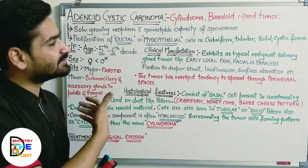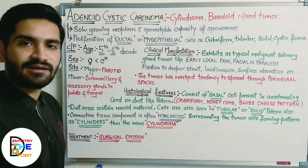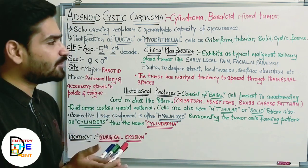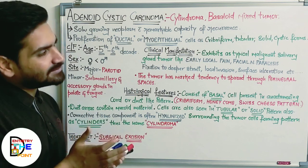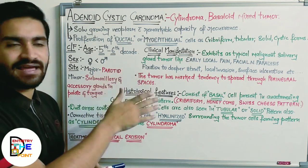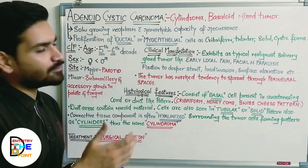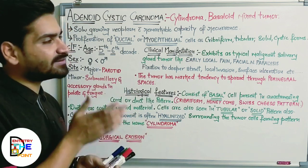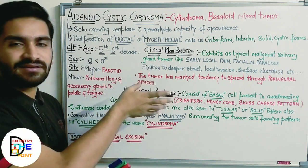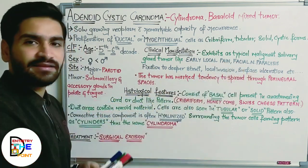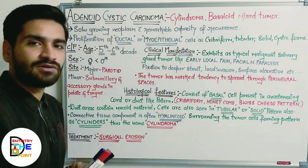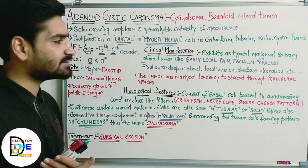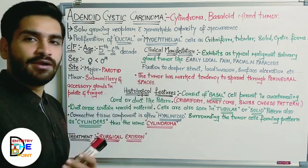The clinical manifestations of this tumor are quite similar to other malignant salivary gland tumors. It exhibits typical malignant salivary gland tumor features: early local pain in the affected area, facial nerve paralysis if the parotid gland is affected due to perineural spread in the facial nerve, and fixation to deeper structures — meaning if you try to move the tumor it will not move because it remains indurated or fixed to the underlying soft tissue or bone.